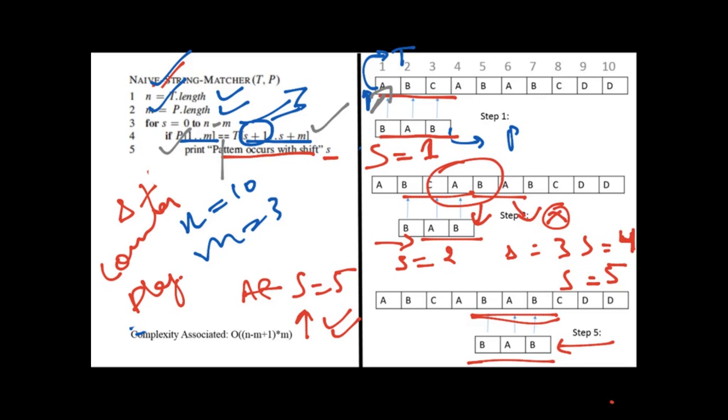This double equal to operator checks if the value on both sides are equal or not. As soon as we get that the patterns are equal, pattern that is present in P and pattern that is present in T, we will assume that pattern has occurred on a shift that is equal to S. So it was extremely simple. I hope you really liked the video. Thank you so much for your time. Love you guys. Bye. Take care.